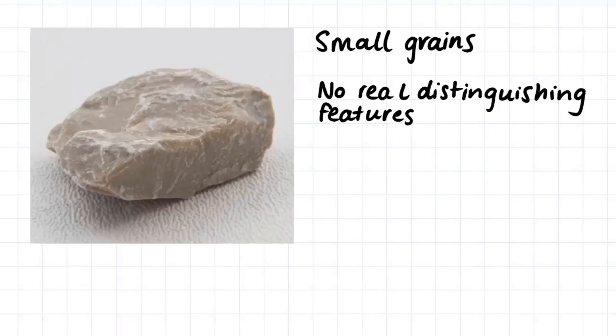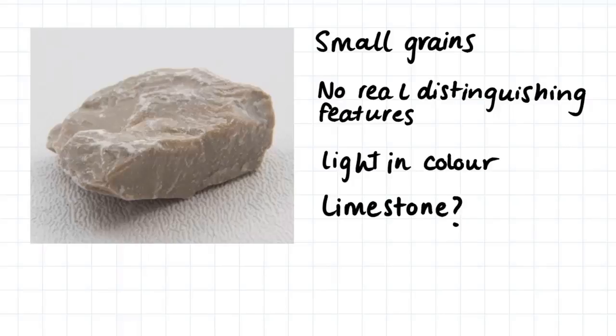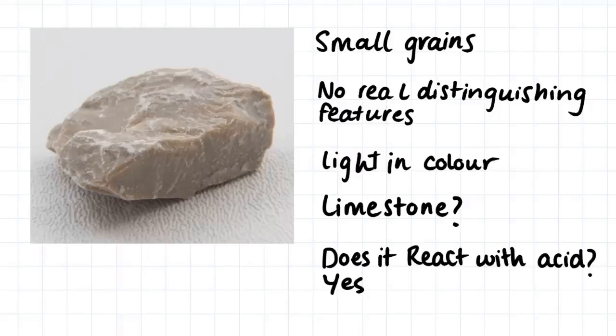Here's the last sample we'll look at in this video. We can see that this sample has small grains and no real distinguishing features. We might think it's a mudstone. It's rather light in colour, which maybe makes us question whether it is a mudstone. Sometimes this light colour is an indicator that maybe it's a limestone. So we test. Does it react with acid? Yes, it does. So we can say that it is a limestone.